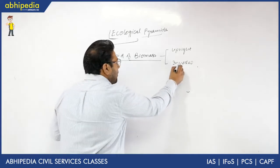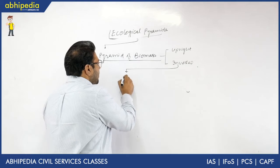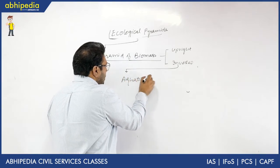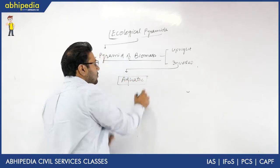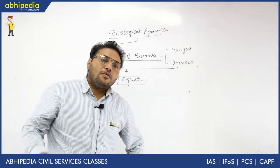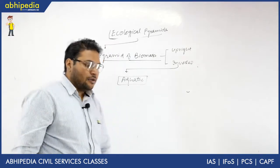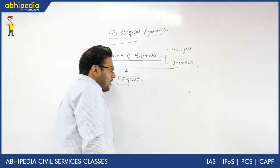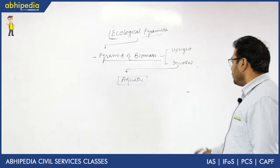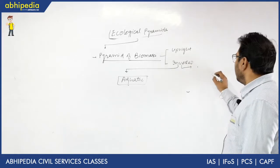The pyramid of biomass is inverted in the case of an aquatic food chain. I will show you an example of an inverted pyramid of biomass.